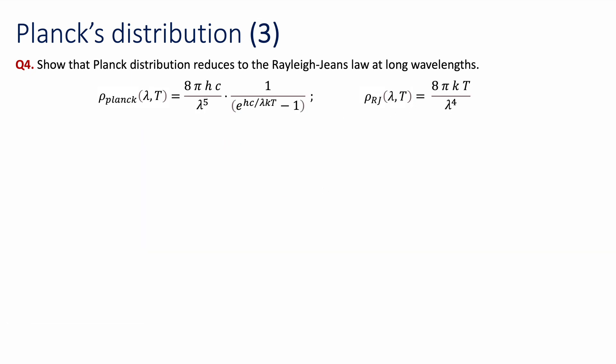Okay, first let's write down the two distributions. We have Planck on the left, Rayleigh-Jeans on the right. And you can see that, of course, Planck's constant and also this exponential factor, whereas Rayleigh-Jeans has temperature and lambda to the power of 4.